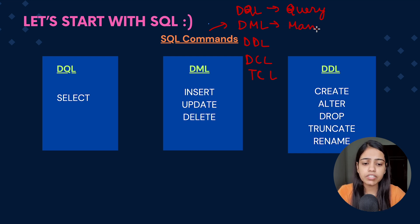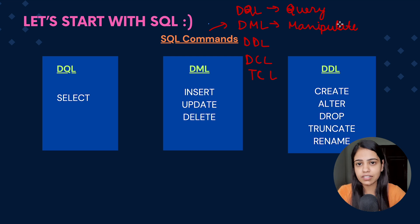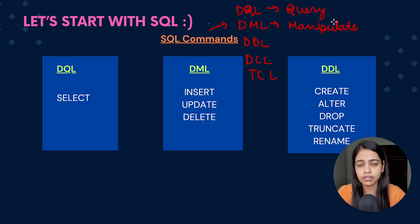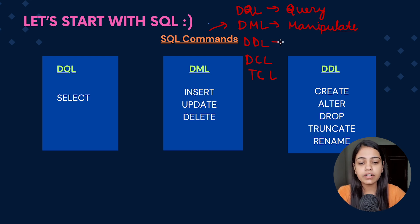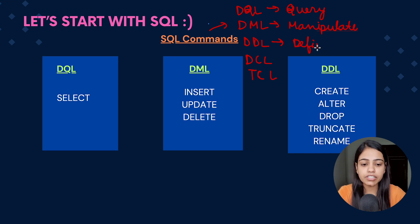The second one was DML command, that is Data Manipulation Language command. Data Manipulation Language command is basically used whenever we want to manipulate some data — like whenever we want to insert some data, update some data, or delete some data. Basically, doing manipulations on the data.